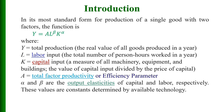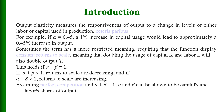In its most standard form for production of a single good with two factors, the function is Y = A × L^β × K^α, where Y is total production, L is labor input, K is the capital input, A is total factor productivity or the efficiency parameter, and alpha and beta are the output elasticities of capital and labor respectively. These values are constants determined by the available technology. Alpha and beta are also known as distributor parameters.